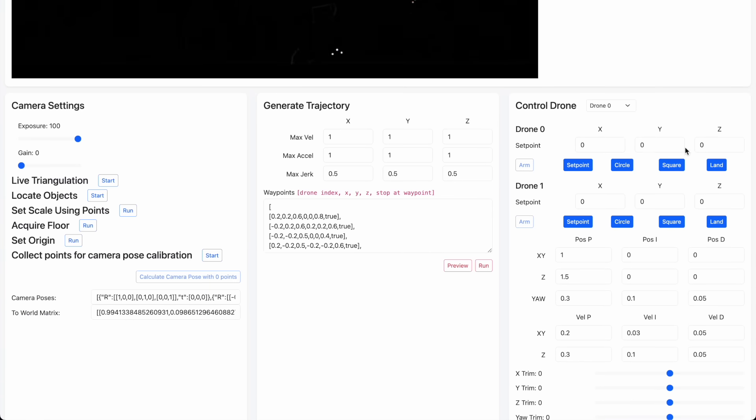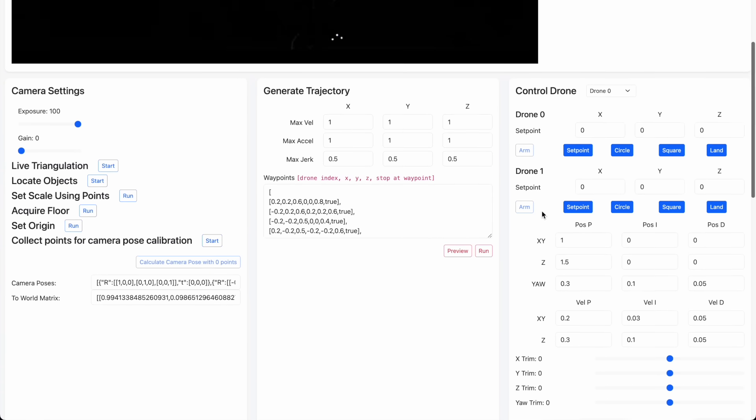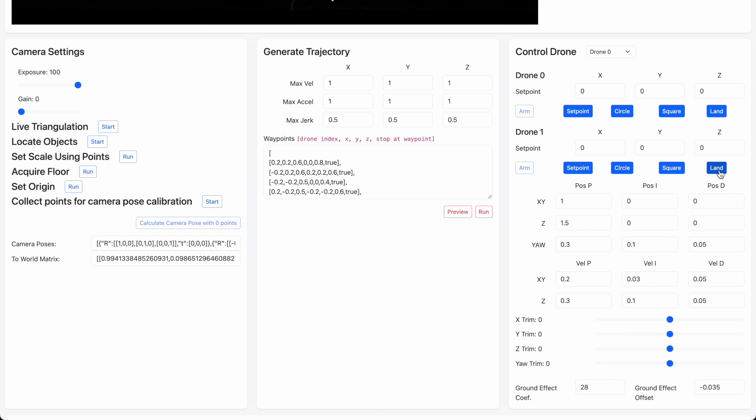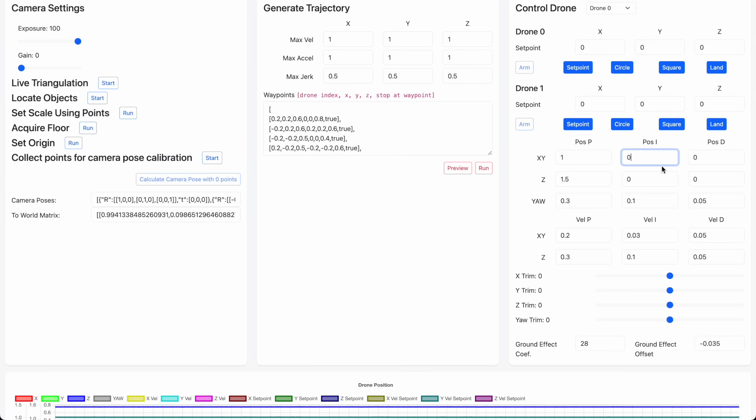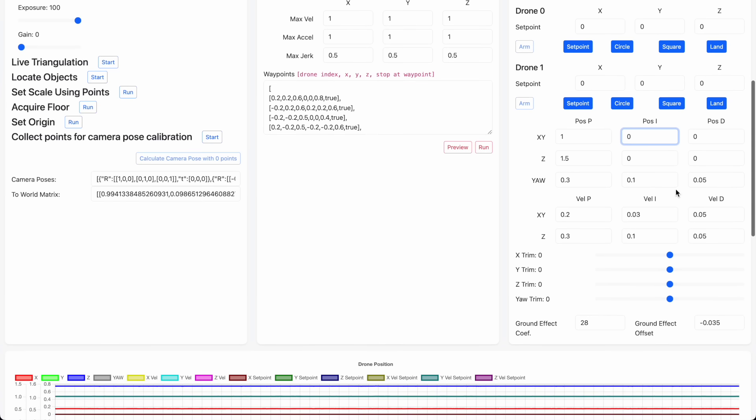On the right here, we can input the setpoints for the drones, arm or disarm them, and change a bunch of parameters on the fly. This is especially useful for the nested PID loops running on the drones, which are an absolute pain to tune.